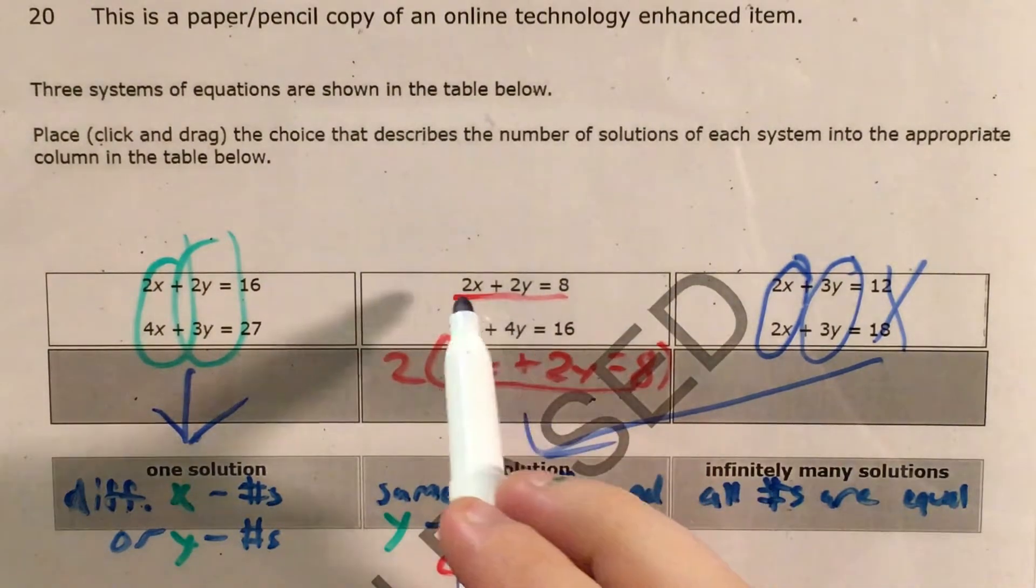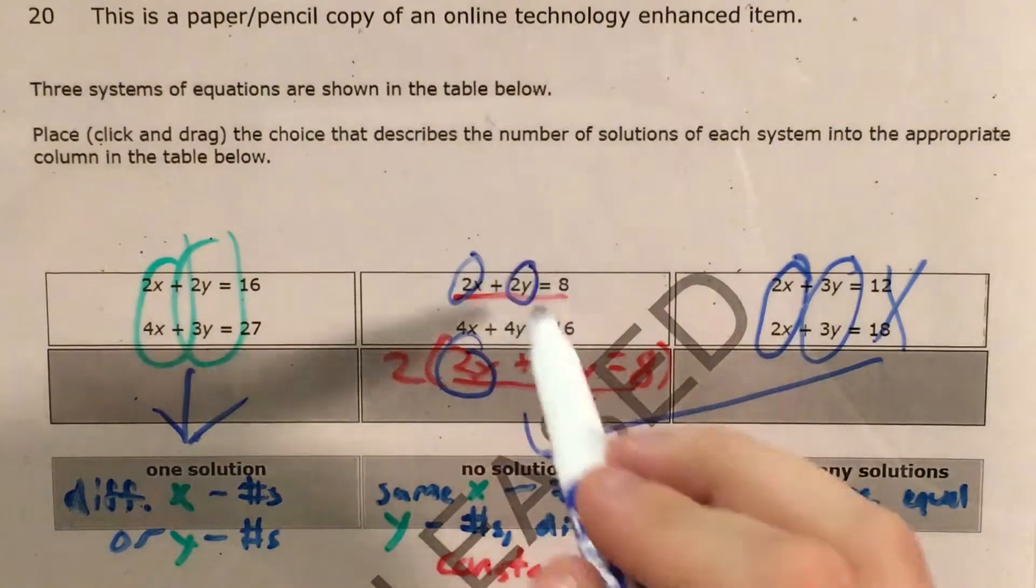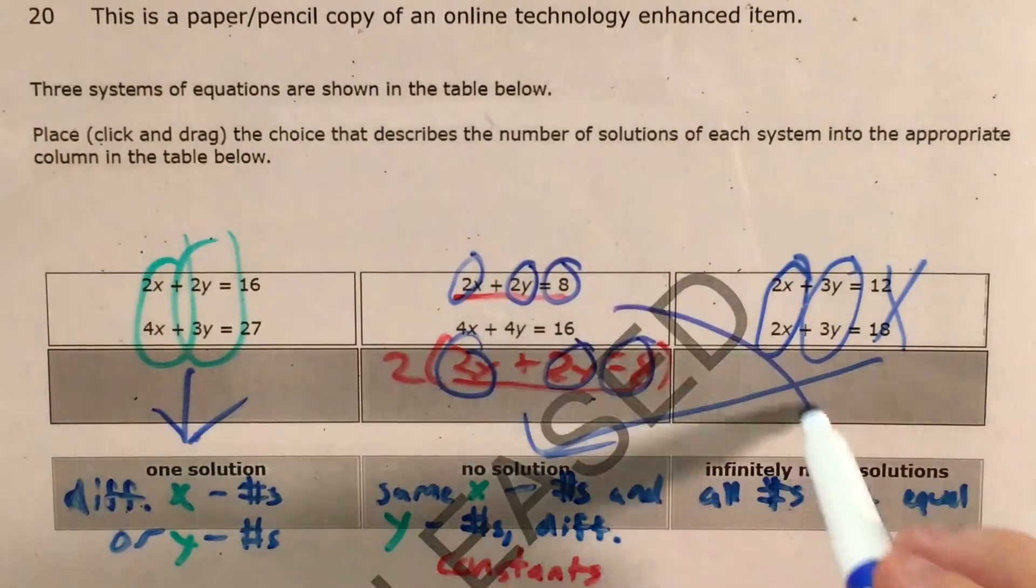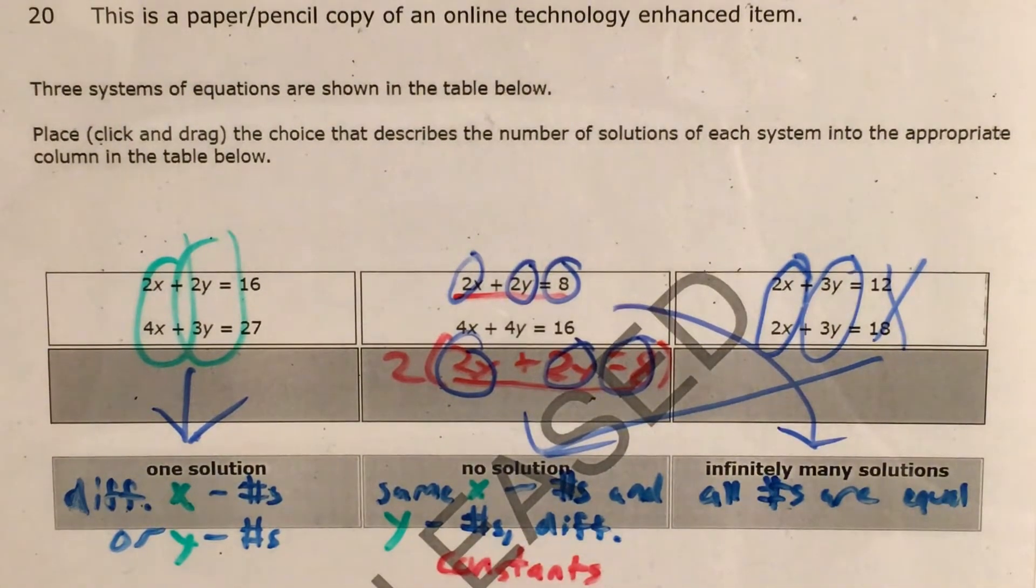So in this case, we have equal x coefficients, equal y coefficients, and equal constants. So this system would have infinitely many solutions. And that was the whole point of this question, the whole idea here, just to match up what has one solution, no solution, and infinitely many solutions.